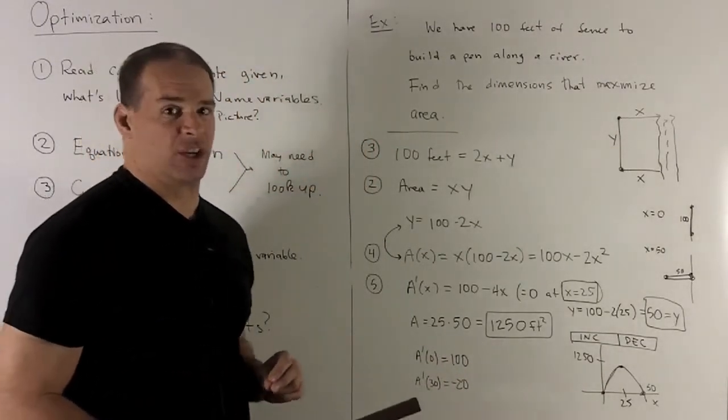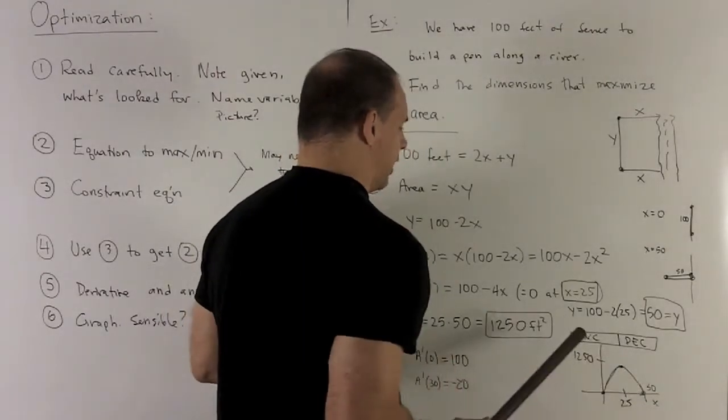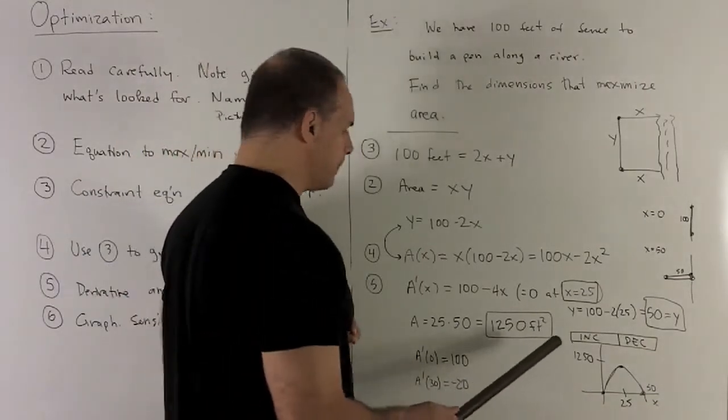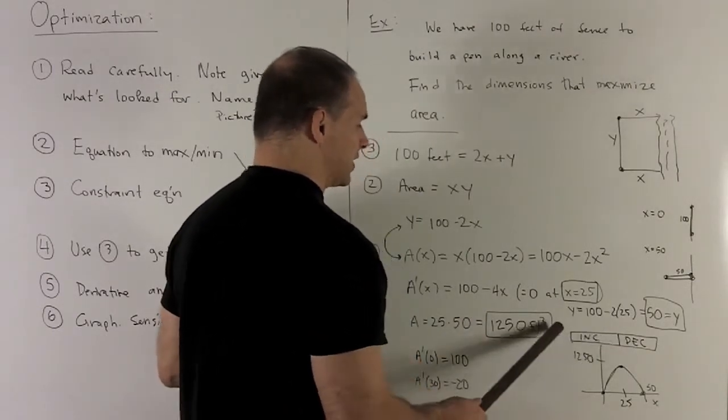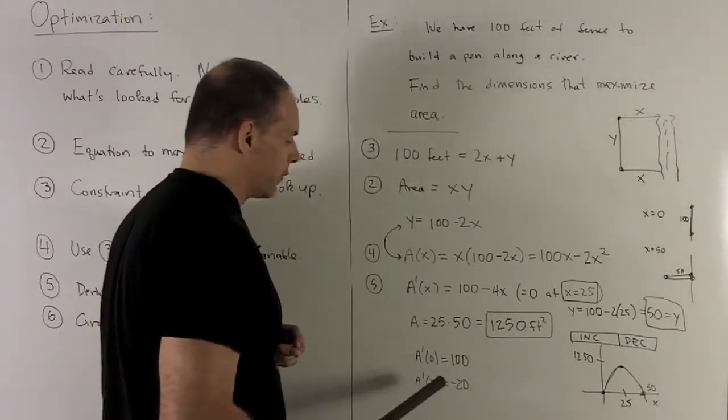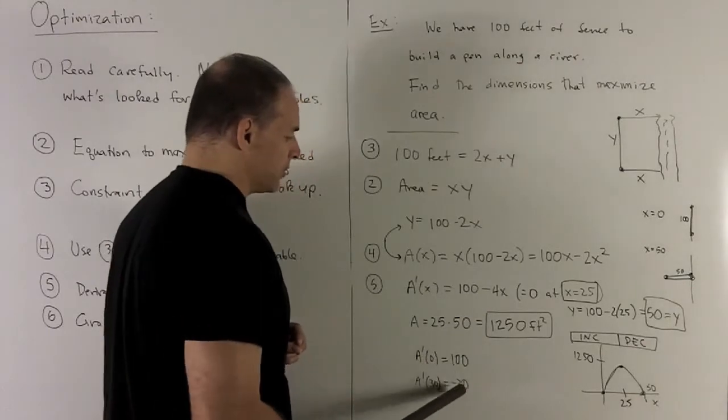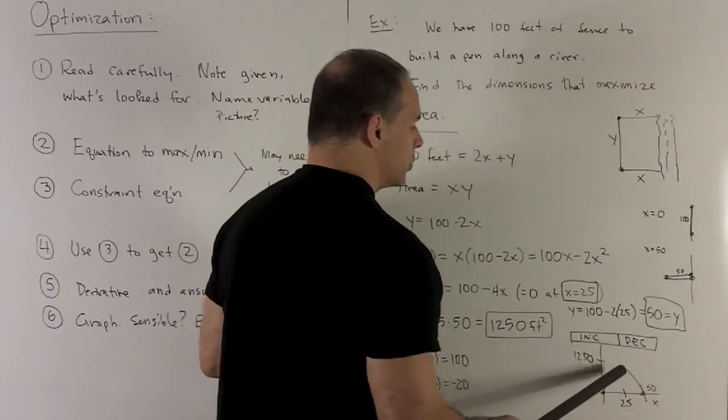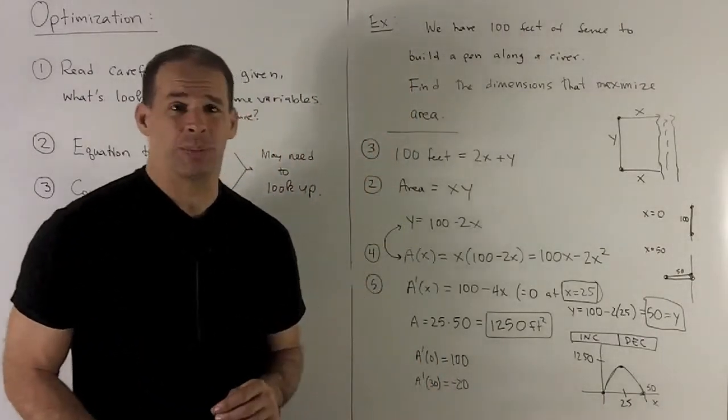I want to check increasing and decreasing on both sides, so I use the first derivative test. We pick a point in each region on each side of 25, and then see what sign comes out. If I put a 0 in to my derivative, that's going to give me 100. That's positive. That's going to mean I'm increasing on this side of 25. Picking a point on the other side, let's go with 30, bigger than 25. We put that in the derivative function. That's going to give me 100 minus 120. That gives me minus 20, which is less than 0. So we're going to be decreasing on this side. So note, we're going increasing, decreasing. That has to be a maximum when I'm at 25. So my answer makes sense.